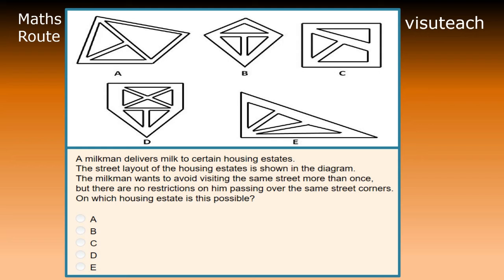To solve this, we will define a vertex as being a point at which streets meet. The degree of the vertex is the number of streets that meet at the vertex. The degree of a vertex is odd if there are an odd number of streets meeting at the vertex, and is even if there are an even number of streets meeting at the vertex.